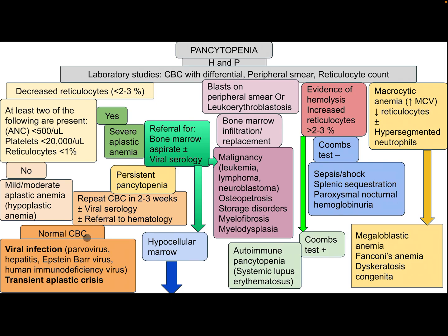If the complete blood count normalizes, this could be viral infection — parvovirus, hepatitis, Epstein-Barr virus, HIV — or transient aplastic crisis. If there is persistent pancytopenia or severe aplastic anemia meeting at least two of the criteria mentioned, referral for bone marrow aspiration with or without viral serology is recommended. This could be malignancy, storage disease, or other conditions.